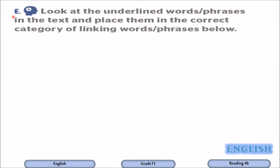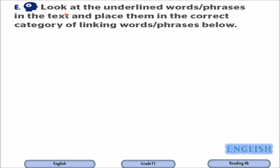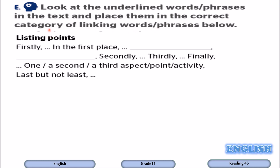Exercise E. In this exercise, you are going to go back to the text and underline words or phrases, then place them in the correct category of linking words according to their functions. For listing points, the writer used: firstly, in the first place, to begin with, and first of all.